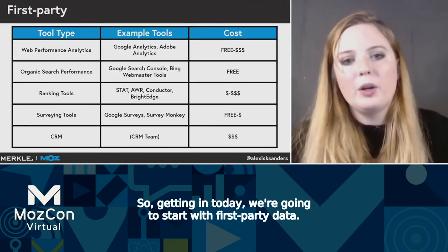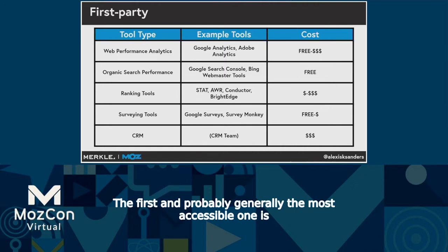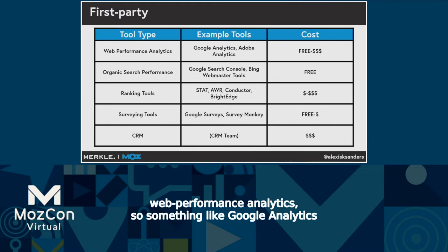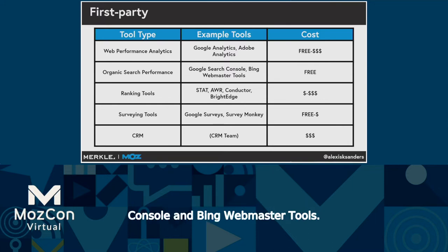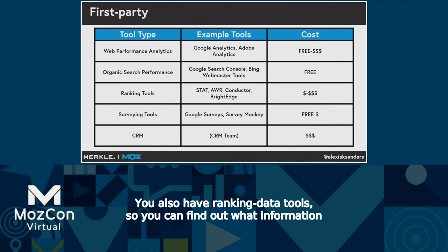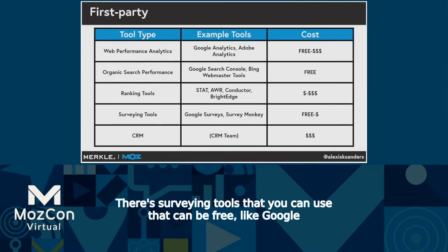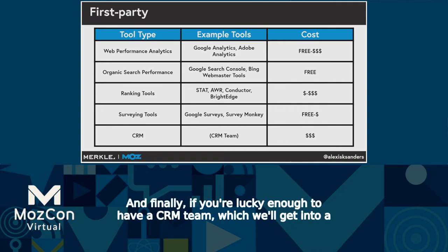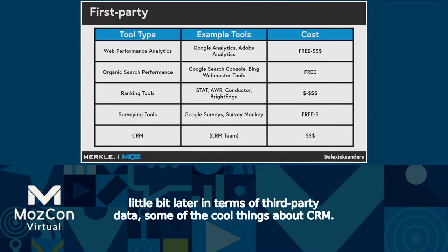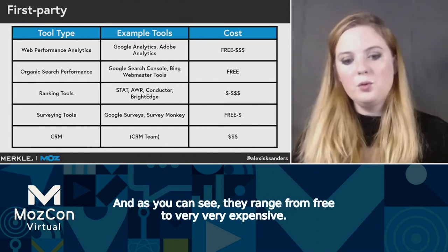We're going to start with first-party data. There are many different places you can collect it. The first and probably most accessible is web performance analytics — something like Google Analytics or Adobe Analytics. Your organic search performance is also free — Google Search Console and Bing Webmaster Tools. You also have ranking data tools. There are surveying tools that can be free, like Google Surveys and SurveyMonkey. And if you're lucky enough to have a CRM team, that's also a great source. These tools range from free to very, very expensive.